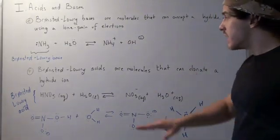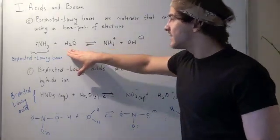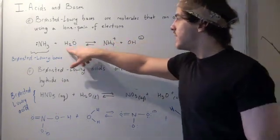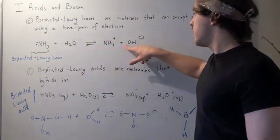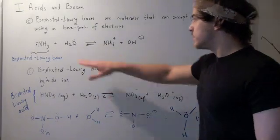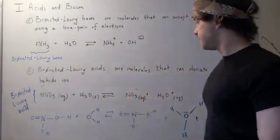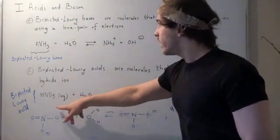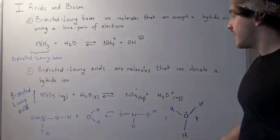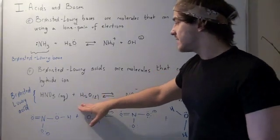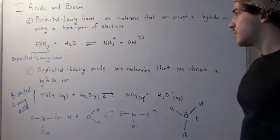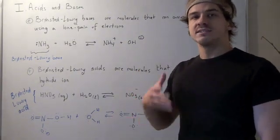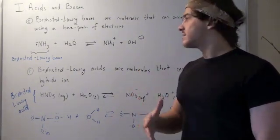Notice something interesting: in the ammonia reaction, water acted as a Bronsted-Lowry acid because it donated an H, giving it to ammonia and producing ammonium, while water itself became hydroxide. In the nitric acid reaction, water took away an H, so it was acting as a base — it accepted an H. One interesting thing about a water molecule is that under basic conditions it acts as an acid, and under acidic conditions it acts as a base.